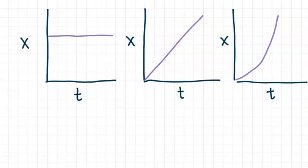Hi physics fam! We are going to run through some graphing examples. Here we have three different position-time graphs, so this should be a review. The first one we have no motion — the position stays the same.